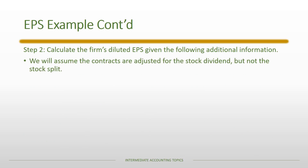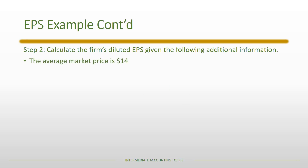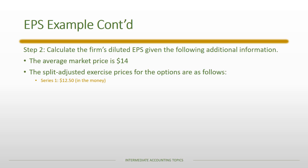Contracts are adjusted for the stock dividend but not the stock split. We start by identifying in-the-money stock options — those where more shares would be issued than repurchased. The easiest way is to compare the strike price to the average market price of $14. For Series 1, the split-adjusted exercise price is $12.50, which is lower than $14 — so it is in the money. For Series 2, the split-adjusted price is $17.50, which exceeds $14 — so it is out of the money and excluded. We include only the Series 1 stock options.